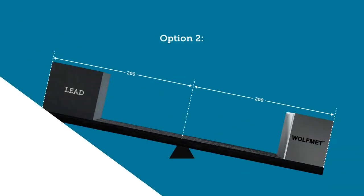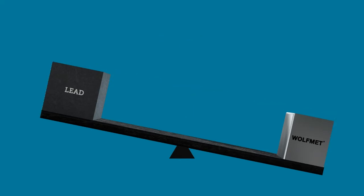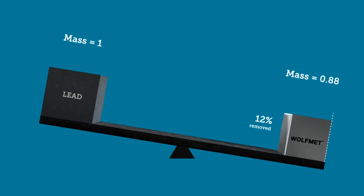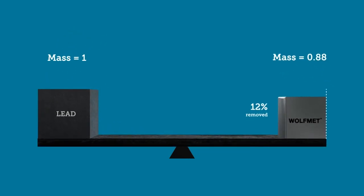The second way to use the shift in centre of gravity is to reduce the mass of the WolfMet weight. In our example, balance is achieved by removing 12% of the WolfMet block. In this way, the overall weight of the system can be reduced by 12% while still retaining the same effective moment.